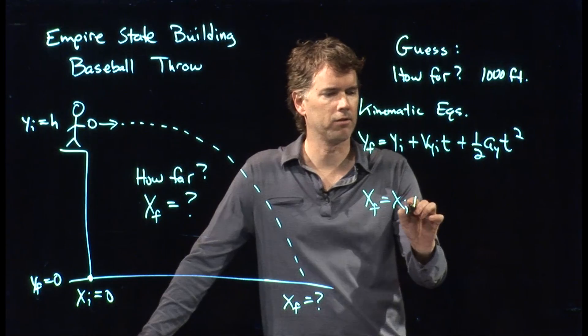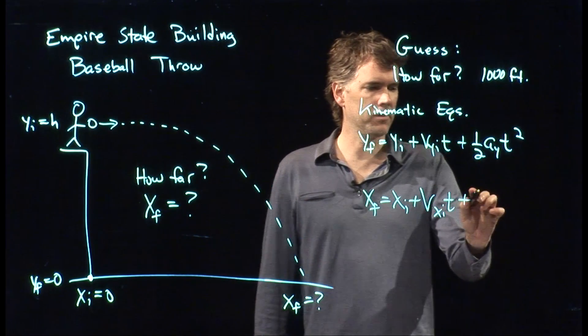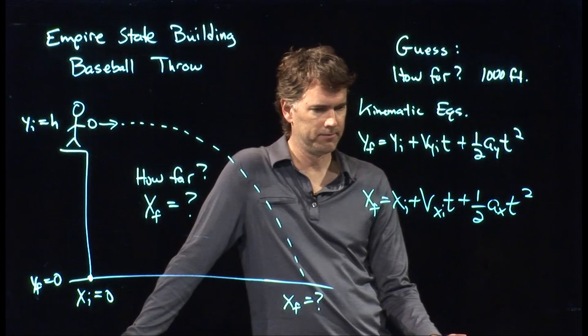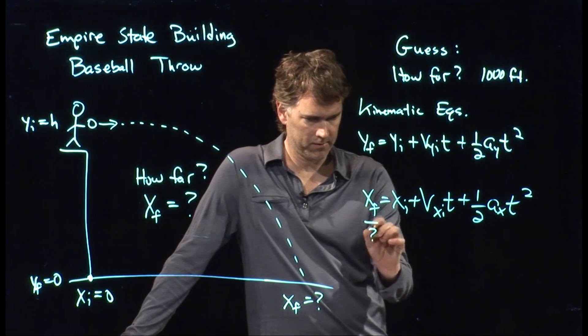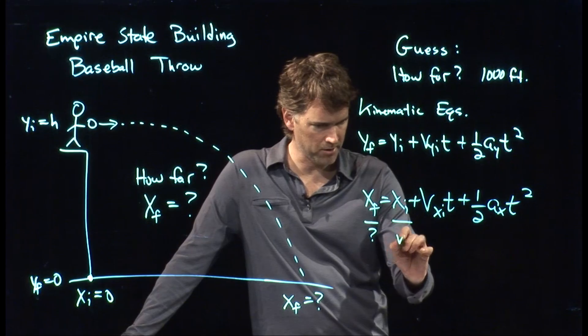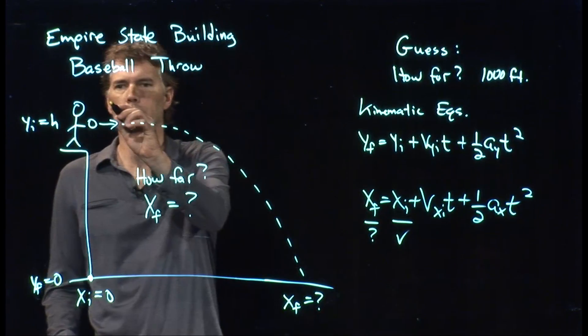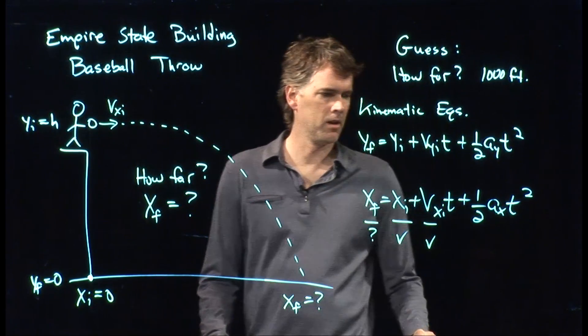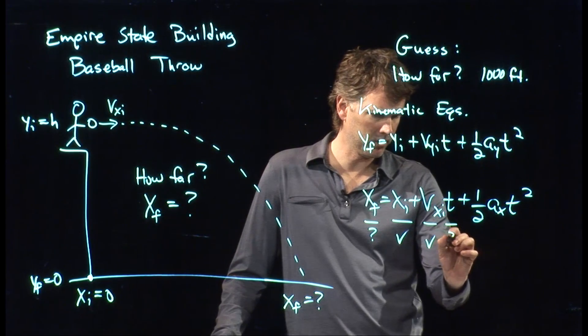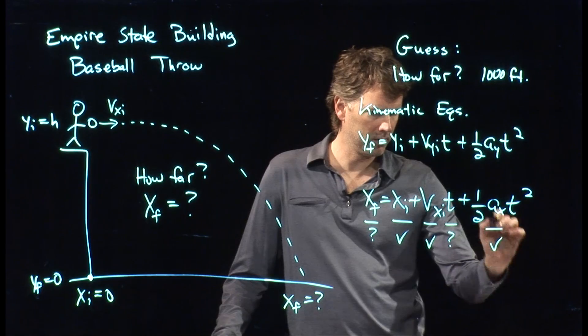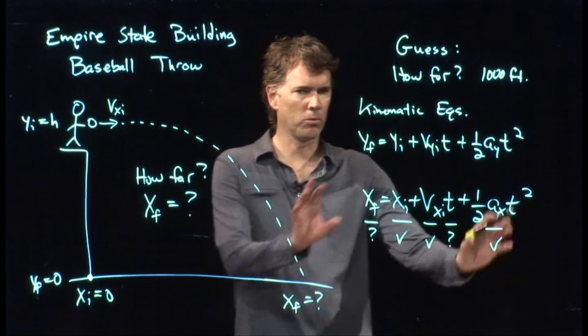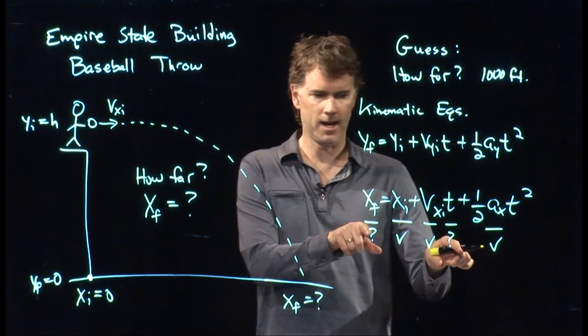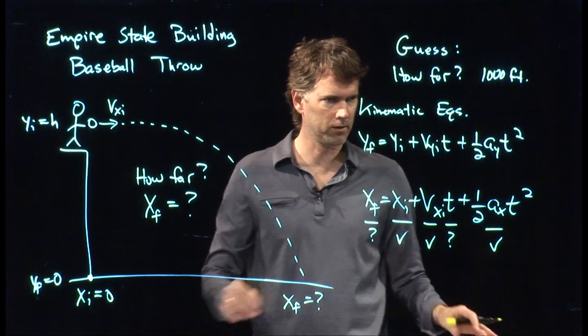Now, let's go to the x equation. x final equals x initial plus v x initial times t plus one-half a sub x t squared. That has x final in it, and that's what we're looking for. x initial, we know. We started at zero. V x initial, we would have to give you that. So we're going to say that we do know v x initial. Time, we don't really know yet. Acceleration, we do know. That's equal to zero. So this is one equation, but we got two unknowns. And that's a big no-no. If we have two unknowns, we need two equations.